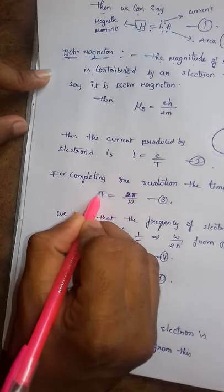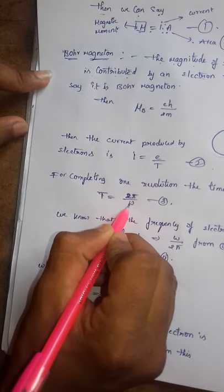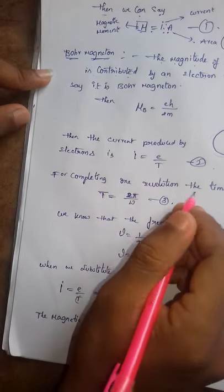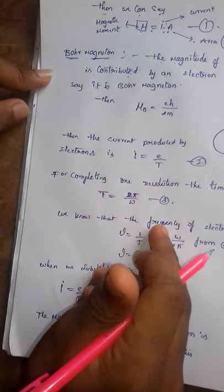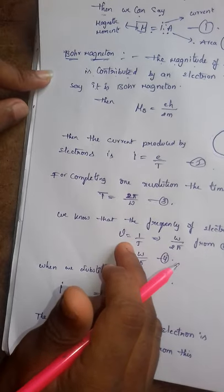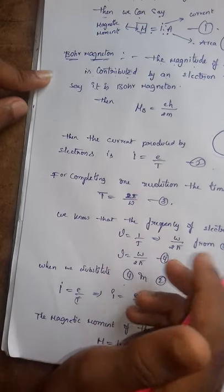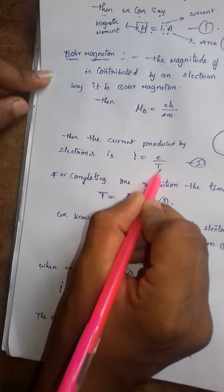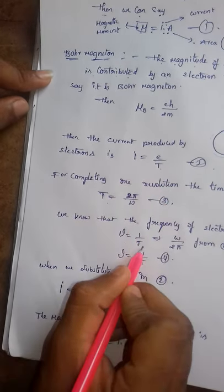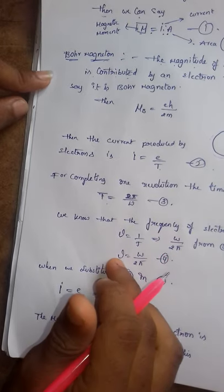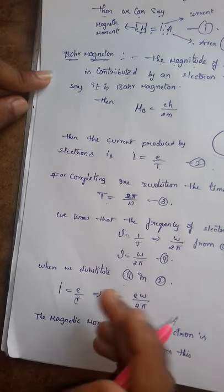We know that the frequency of electron is ν equals to 1 by T. From this equation, we can write it as omega by 2π. So frequency equals to omega by 2π. This is the fourth equation.